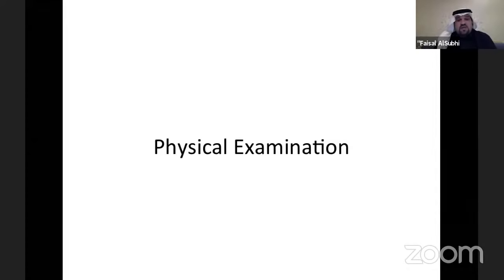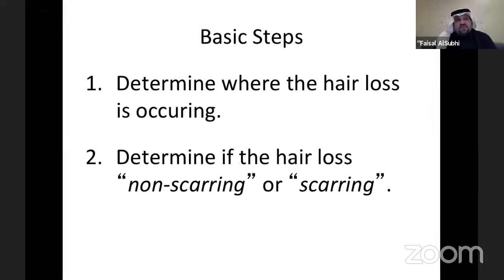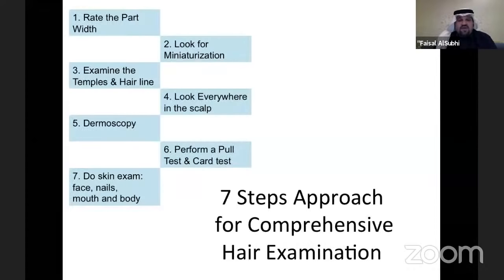The physical examination has two purposes: to determine where the hair loss is occurring, and to determine if the hair loss is non-scarring or scarring. I'll give you a seven-step approach for comprehensive hair examination: raise a part, look for miniaturization, examine the temples and hairline, look everywhere in the scalp, use dermoscopy, perform hair pull test and card test, and do a skin examination of the face, nails, mouth, and body.